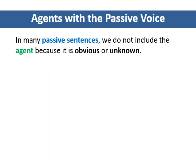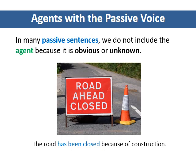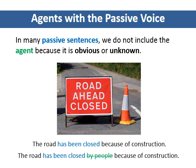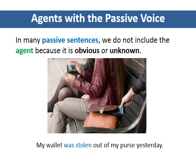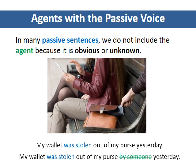In many passive sentences, we do not include the agent because it is obvious or unknown. Read this sentence. Who closed the road? We know that people closed the road, so it is not necessary to include the agent in this sentence. Therefore, the sentence does not have a by-phrase. In this example, it is also not necessary to include the phrase by someone because the agent is obvious or unknown.